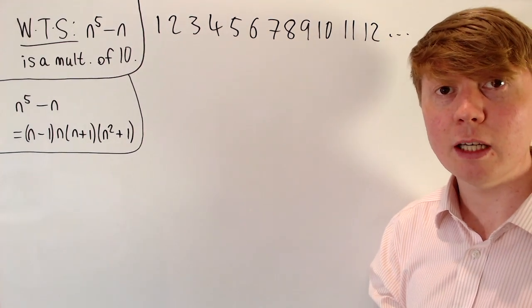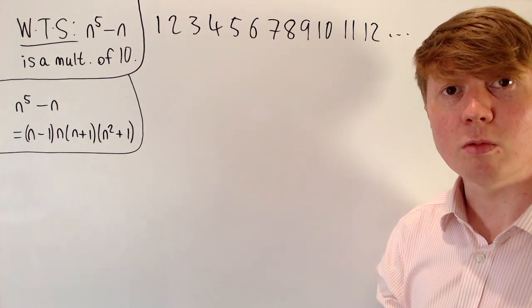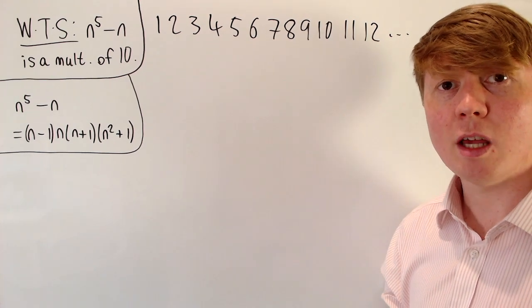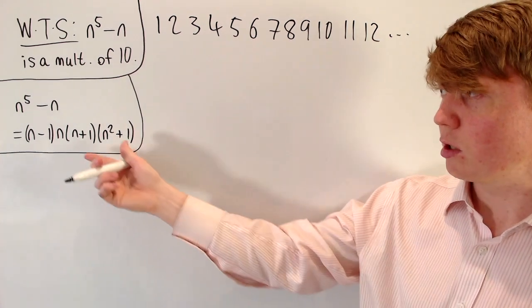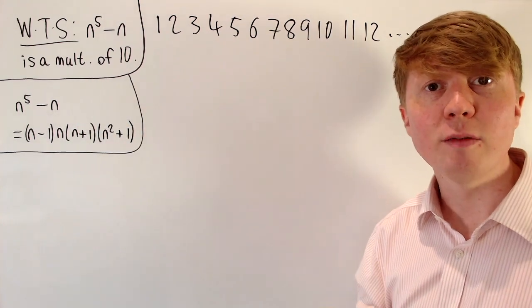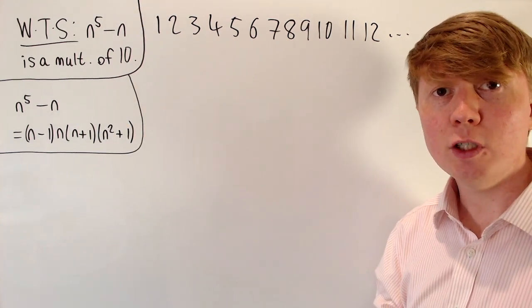So in fact, if you only had two consecutive integers, this would still guarantee that one of them was a multiple of 2. So that means we've got a multiple of 2, which is a factor of n to the 5 minus n. So this is definitely a multiple of 2.